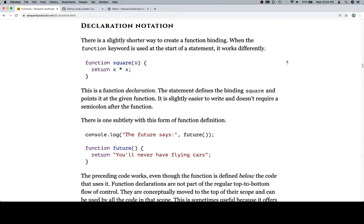You have a function square, it takes a parameter x, and the return is going to be x multiplied by x. This is a function declaration. The statement defines the binding square and points it at the given function. It is slightly easier to write and doesn't require a semicolon after the function.